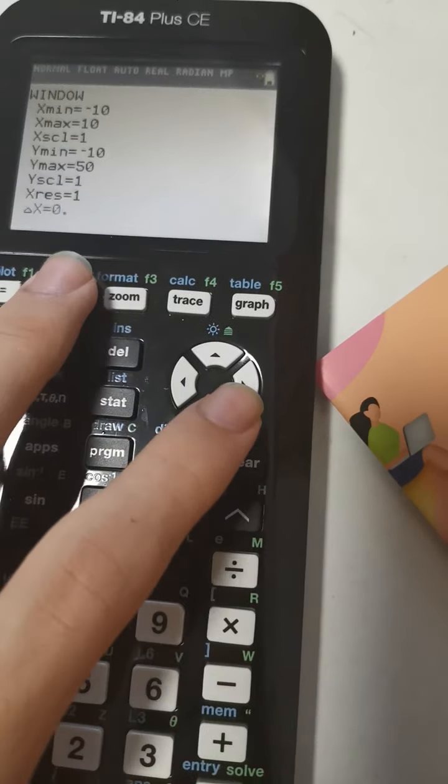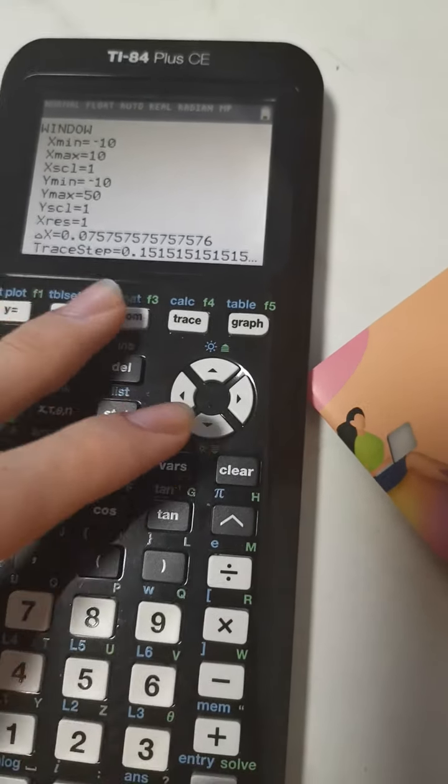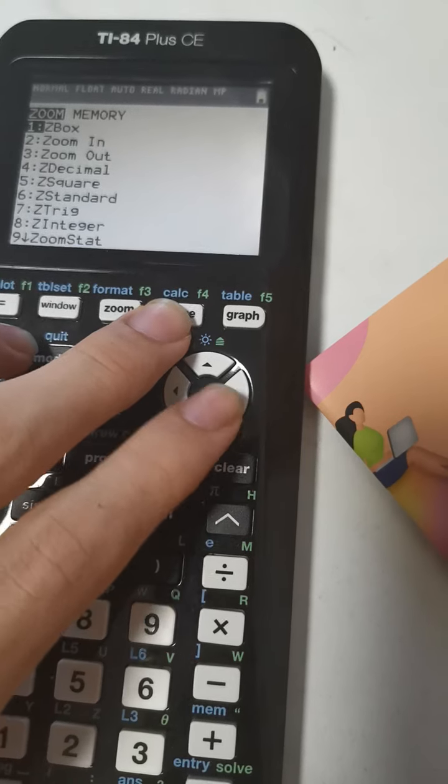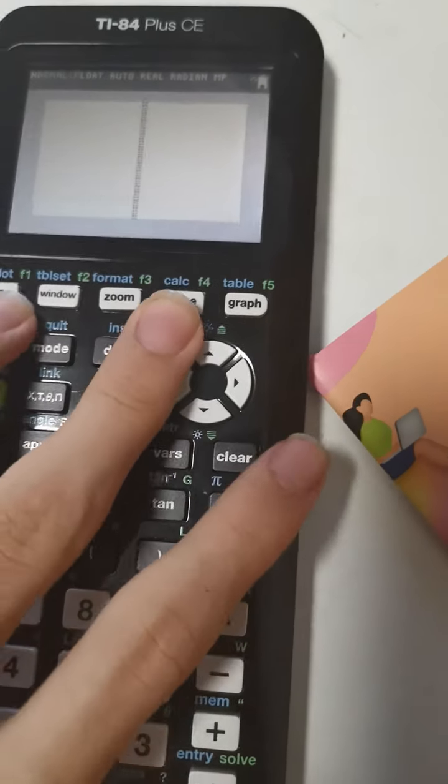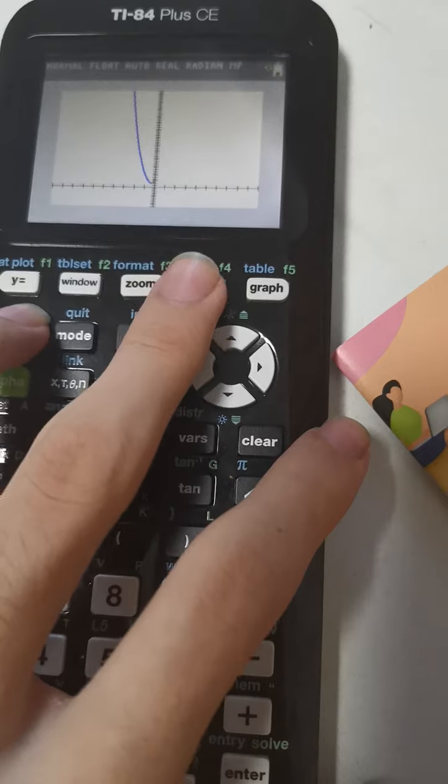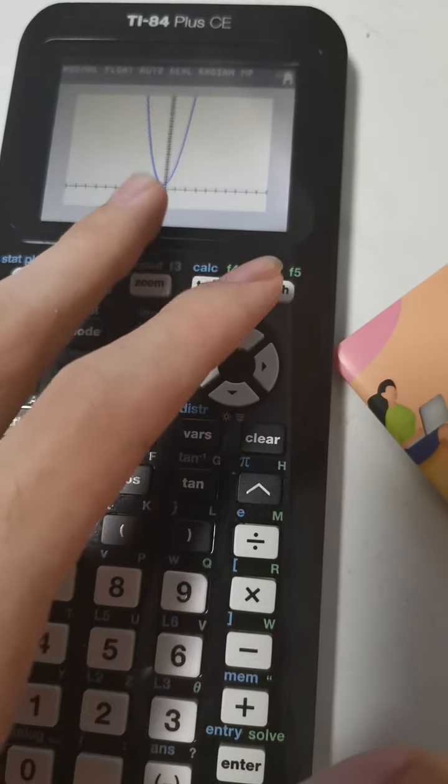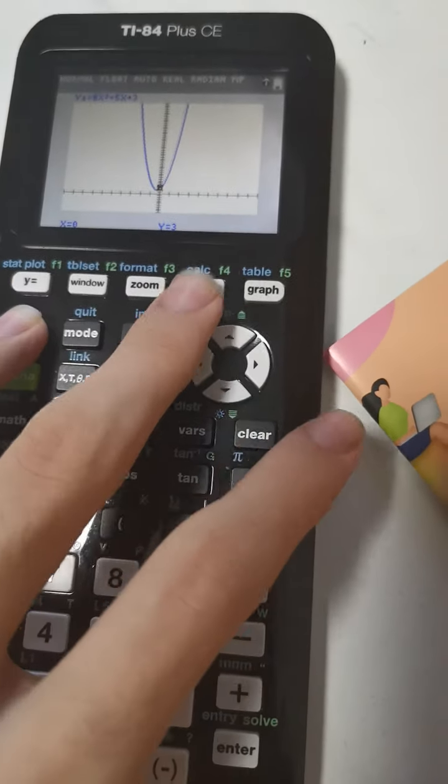When you draw a graph, you have a lot of options. You can change the scaling with window, you can zoom to see different details, and you can trace, and you can do second trace to get important information. For instance, here's my graph, it's quadratic.